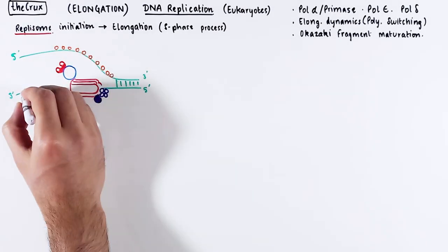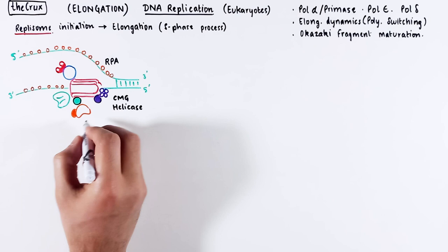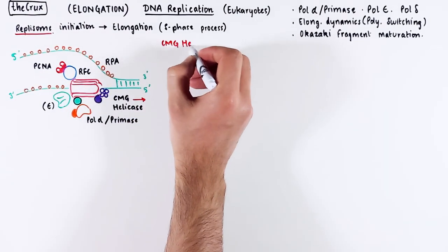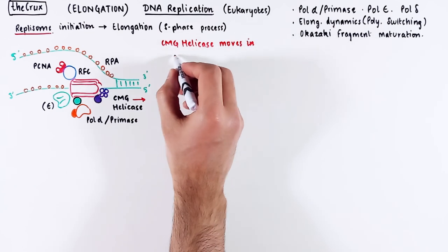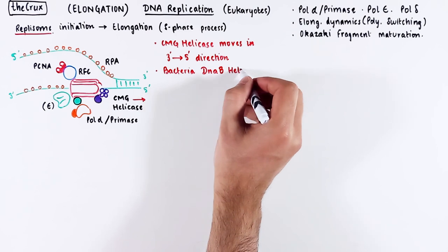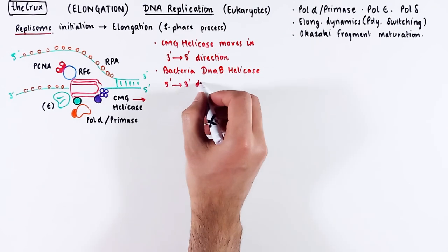Let's sketch one side of the replosome to understand how it all starts and then continues into elongation. I will not draw the other side because it is an identical process on the other side as well. So as we said before, the CMG helicase moves in the 3' to 5' direction. This is in contrast to the bacterial DNAB helicase, which moves in the 5' to 3' direction.